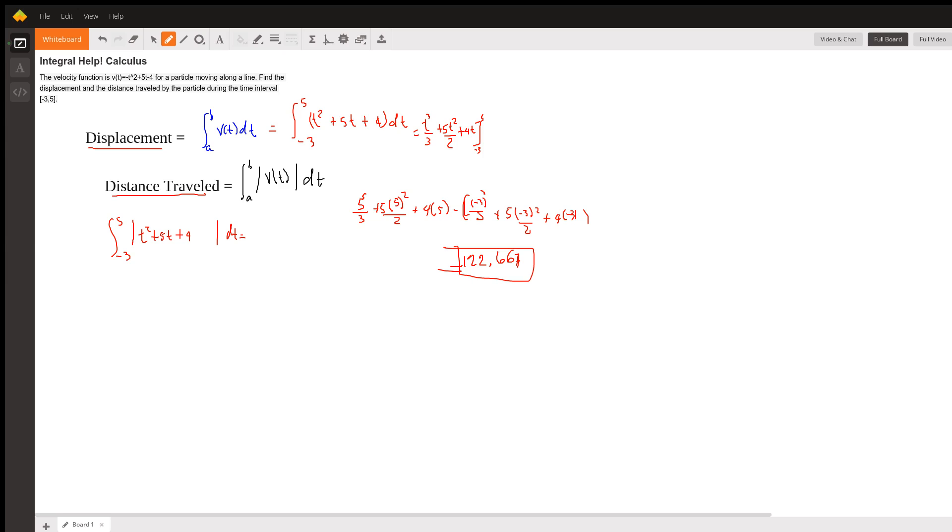The absolute value is found in Math, then move to the right to abs. Enter the function t squared plus 5t plus 4 dx, and the answer is 149.6667.